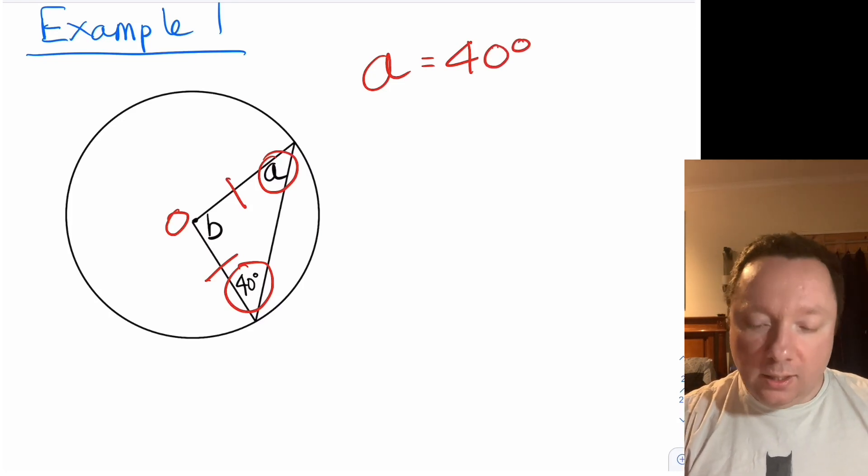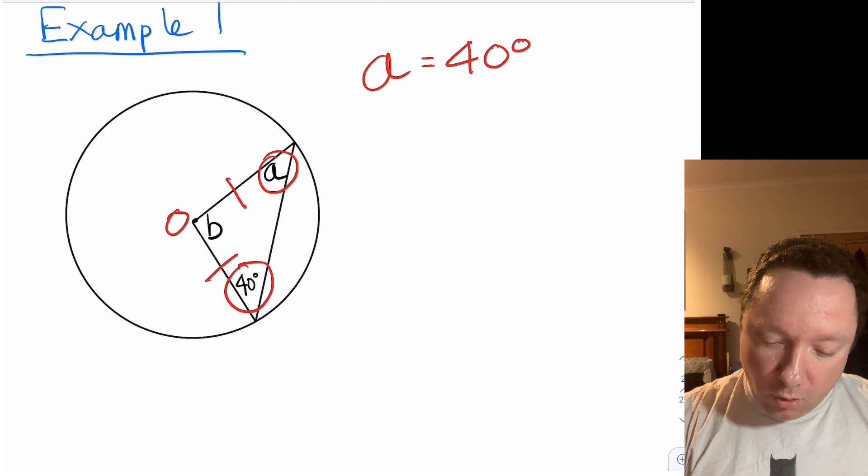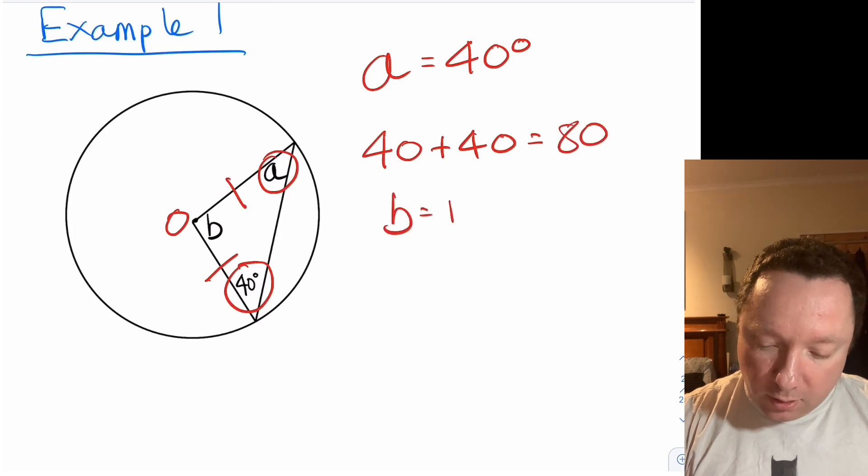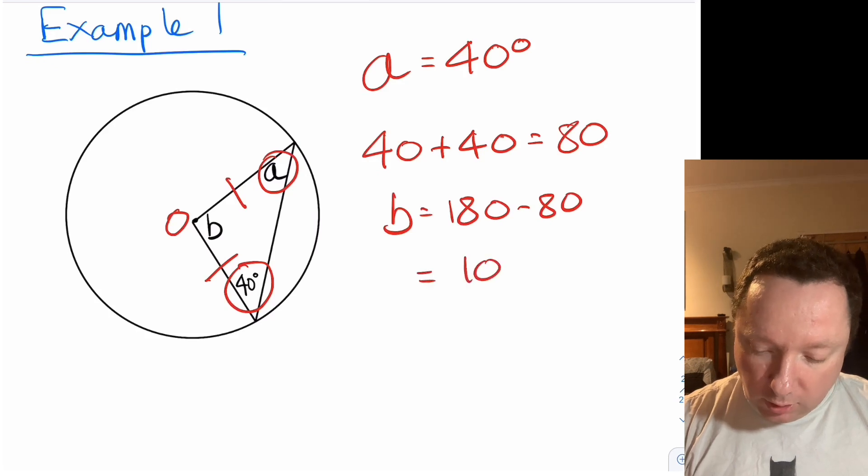Then angles in a triangle add up to 180, so we've got 40 plus 40 equals 80. So b must be 180 minus 80 which equals 100 degrees.